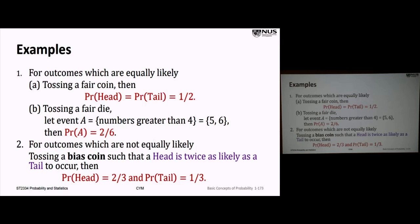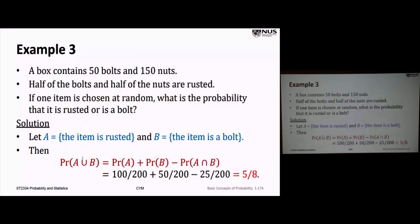For outcomes which are not equally likely: if we flip a biased coin where the chance of a head is twice as likely as a tail, then the probability of a head is two over three and one over three for a tail.